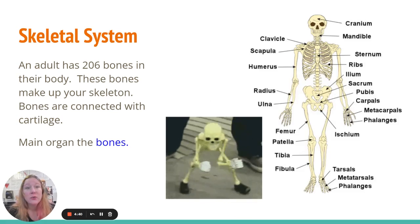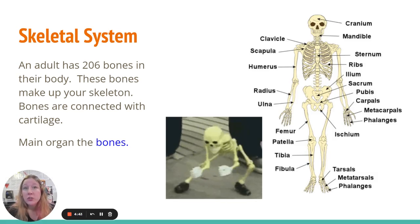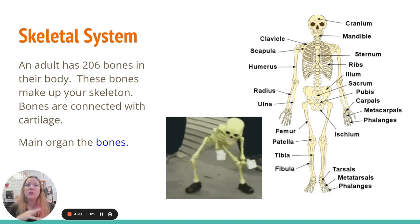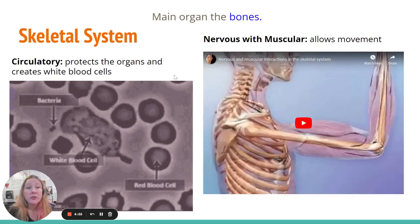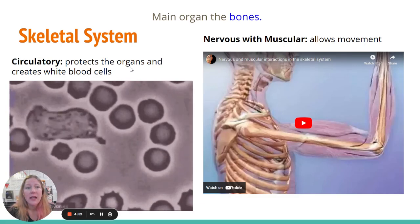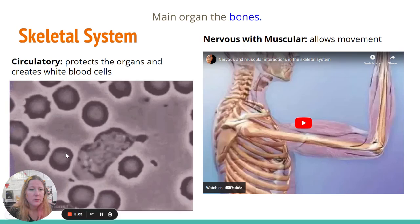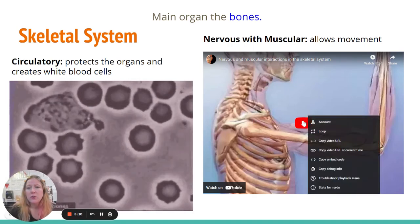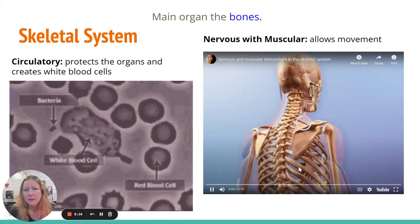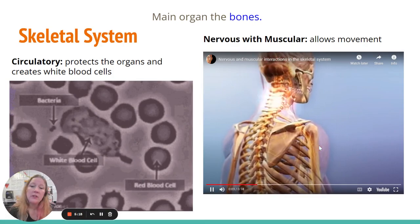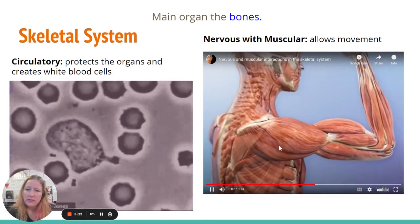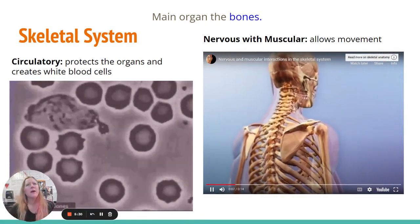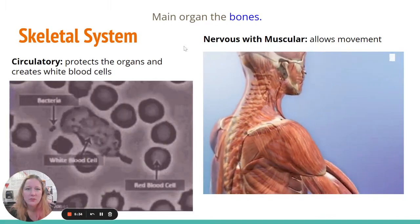Now the skeletal system. An adult has 206 bones — children actually have more, and they fuse over time. These bones make up our skeleton and are connected with cartilage to things like our muscles. The circulatory system works with the bones and protects the organs. Here's a white blood cell chasing down a bacteria — in the blood you've got those two different types of cells. The skeletal system is connected to the nervous system: the nervous system tells you to move, the muscles move, and the skeleton moves. Muscles move the skeleton, and that's how we move after the nervous system sends the signal.